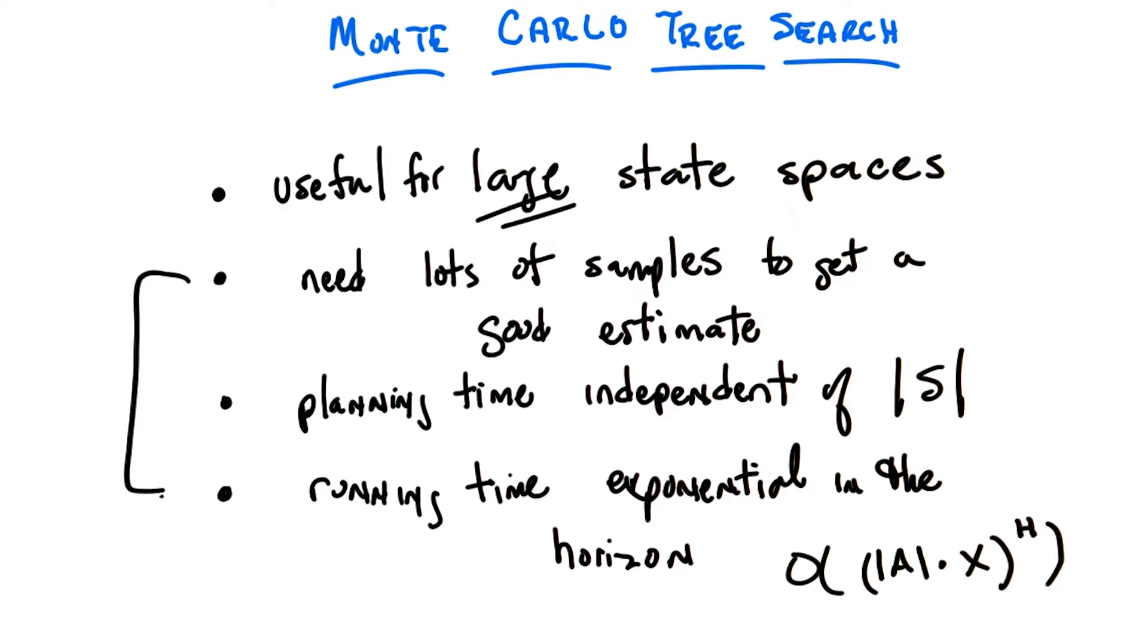So is there a sense in which we traded, in big state spaces, we traded being exponential in the number of state features, say, for instead exponential in the size of the horizon?